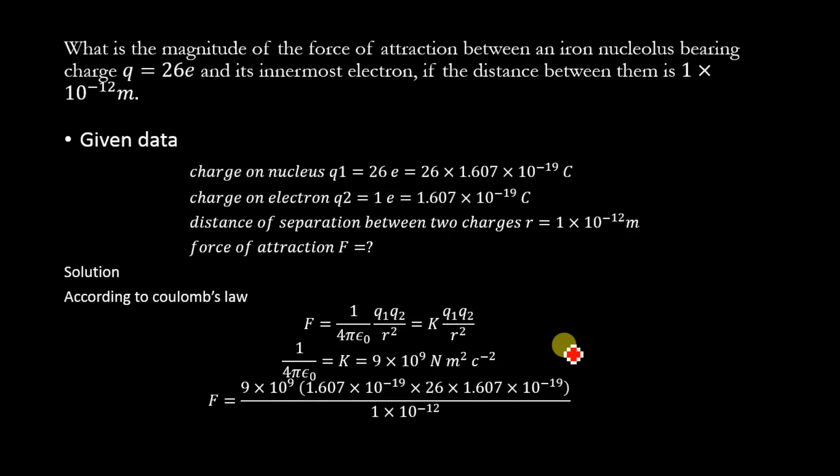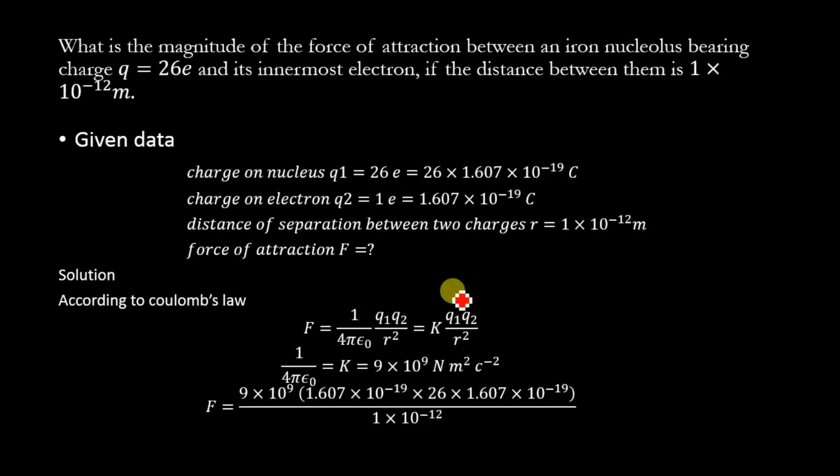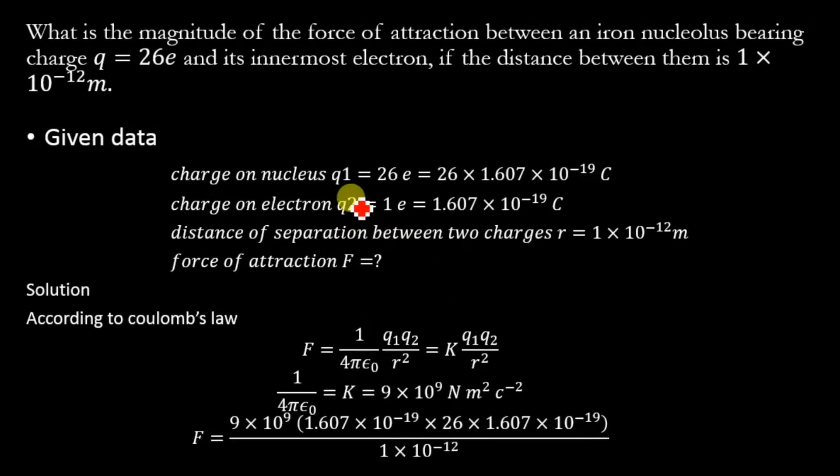Let's solve this numerical. The given data is: charge on the nucleus q1 = 26e = 26 × 1.607 × 10^-19 coulombs.